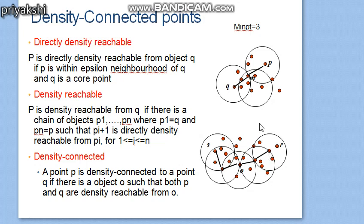To summarize the three concepts: directly density reachable means m is within the epsilon neighborhood of p and p is a core point, so m is directly density reachable from p — this concept is asymmetric in nature. Density reachable means there is a chain, e.g., p to m and m to q, making q density reachable from p. Density connected means r and s are both density reachable from o, so r and s are density connected.